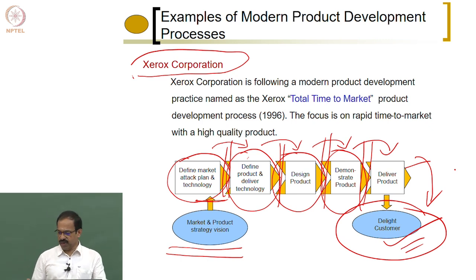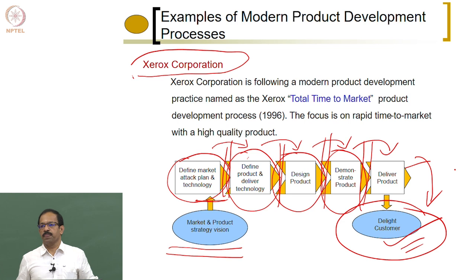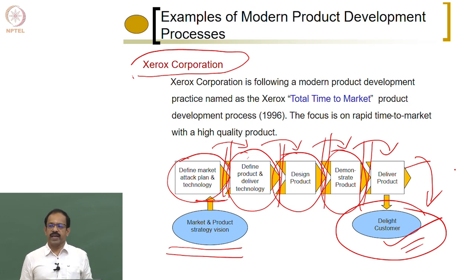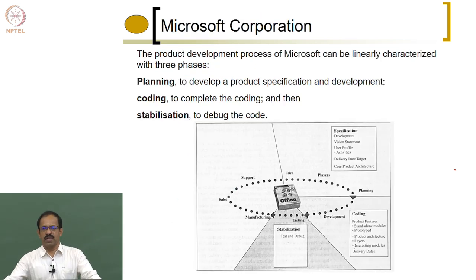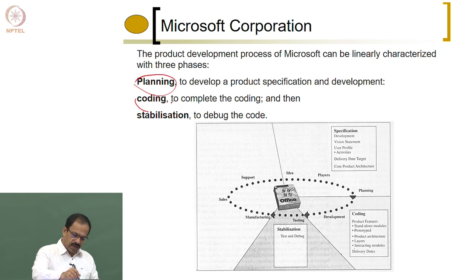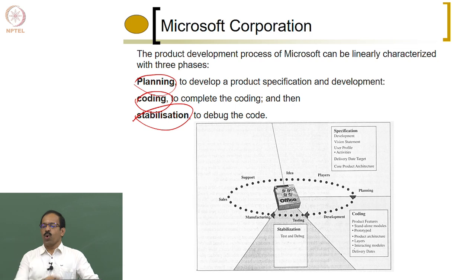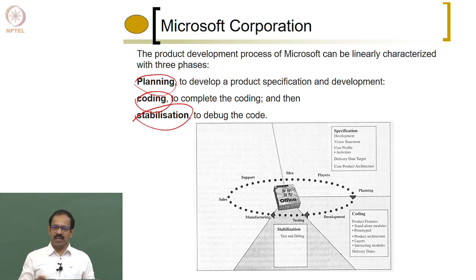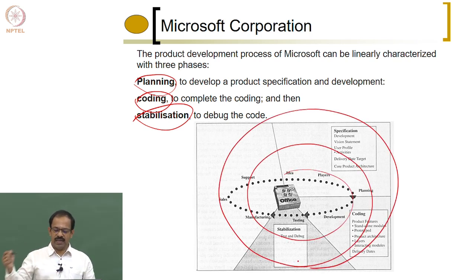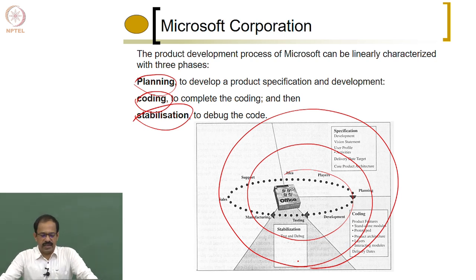The previous example was the stage-gate process. For the spiral model, software companies like Microsoft use this. Microsoft has three stages: planning, coding, and stabilization. This forms one cycle, then again it goes through planning, coding, and stabilization. This keeps happening through multiple cycles and finally they release the product — that is the spiral design process followed by Microsoft Corporation.